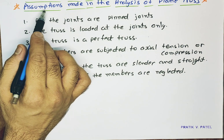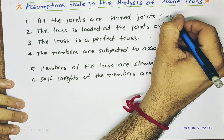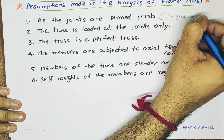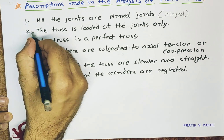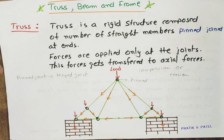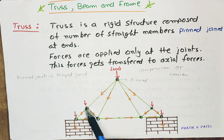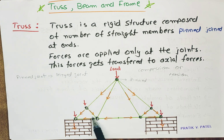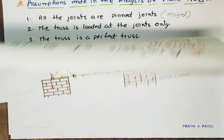The assumptions we need to remember are: first, all the joints are pinned joints — we can say they are hinge or pinned. As per the definition of the truss, the joints are pinned joints. Second, the truss is loaded at the joints only. As explained in previous lectures, from the definition of the truss, loads are acting only at the joints. The red ones and the rounds are the joints of the truss. So this is the second assumption: the truss is loaded at the joints only.